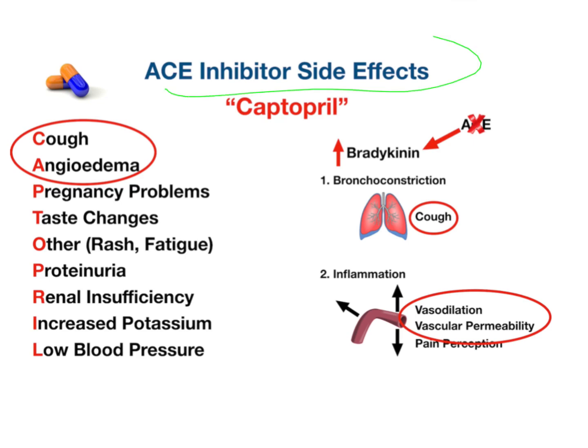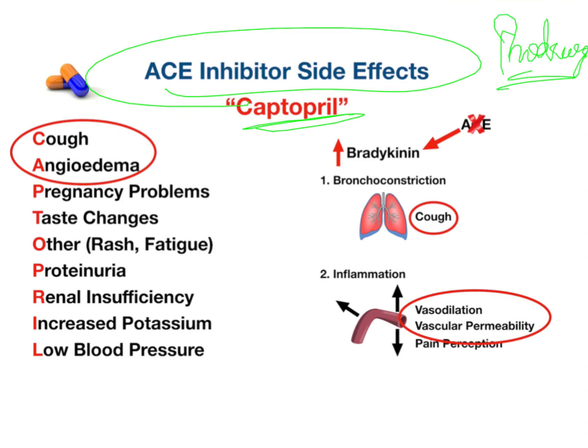In order to remember the side effects of ACE inhibitors, captopril is a useful mnemonic. Captopril is a drug that belongs to the ACE inhibitor class. One important thing to remember is that all ACE inhibitors are available as pro-drugs, except captopril. So all of them undergo biotransformation in the body and form their active metabolite.